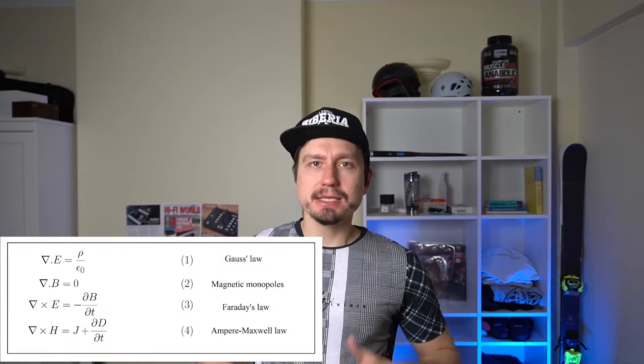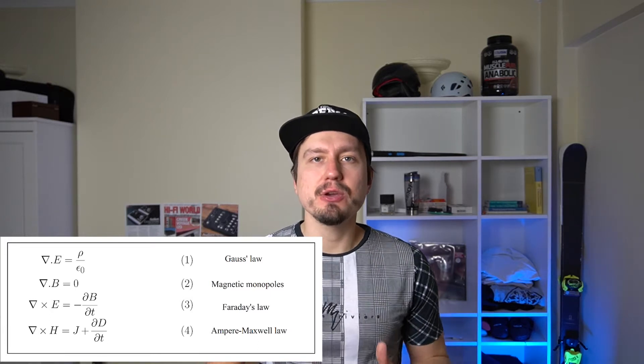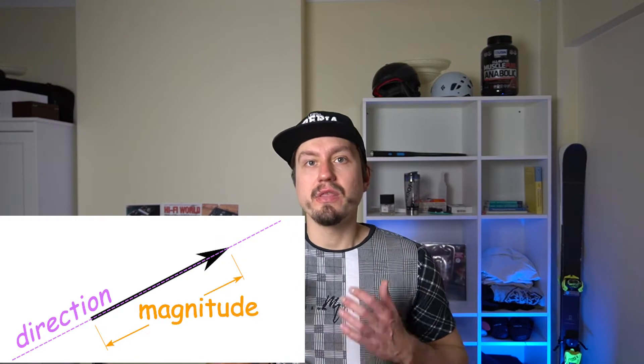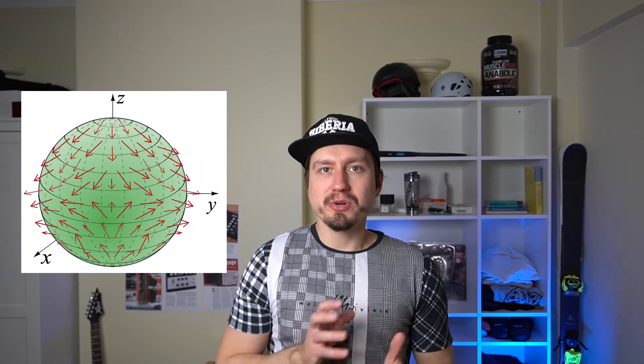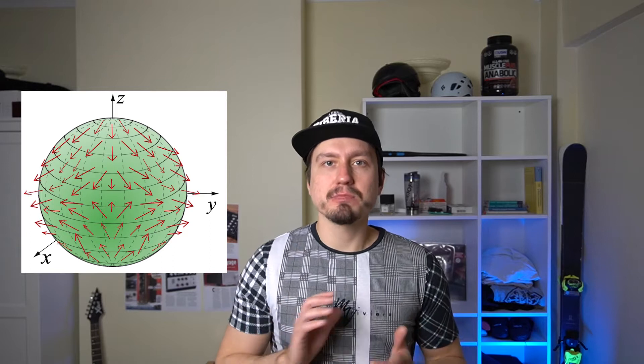Moving on to Maxwell's equations — although those equations are rarely used on their own, they still provide a valid basis for understanding electromagnetic waves. But in order to understand them, we must review some fundamental mathematical concepts first. We must begin with vectors. A vector is a quantity that has a direction and a magnitude. The length of a vector is proportional to the quantity's magnitude, and the direction is usually in x, y, or z. Vectors can create vector fields, which are a three-dimensional representation of multiple vectors in a closed space.